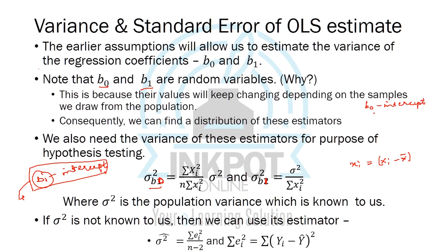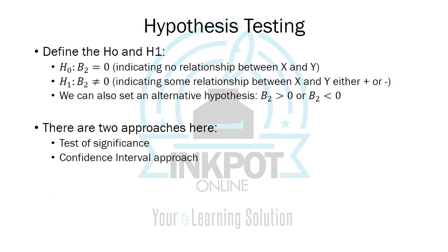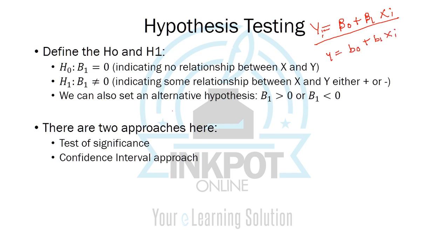Now we can move on to hypothesis testing. We first define the regression equation, which looks like b0 plus b1 times xi. What we estimated is a sample regression function, where small b0 is an estimator of beta 0 and small b1 is an estimator of beta 1.